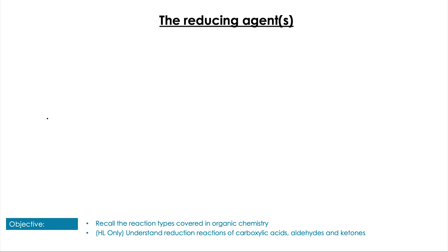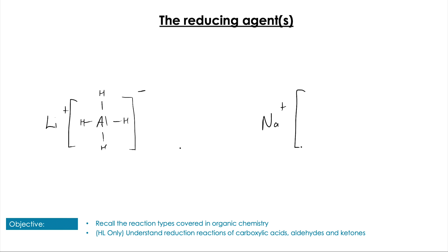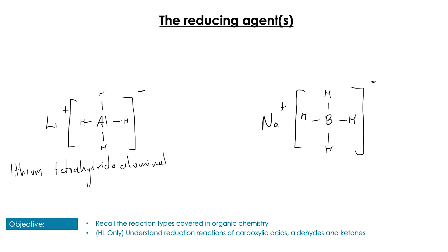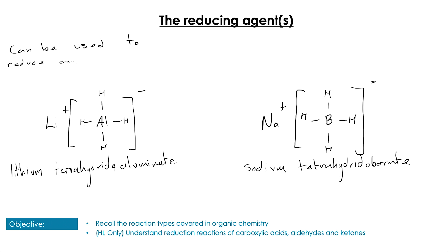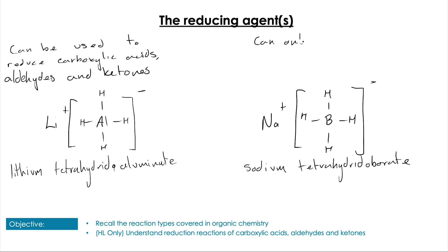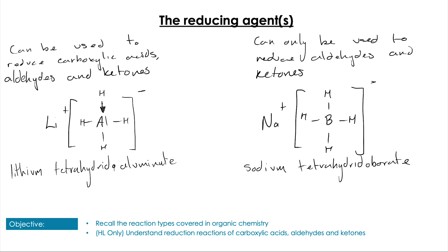The key part is the reducing agents. There are two reducing agents at IB: LiAlH4 — lithium tetrahydroaluminate — and NaBH4 — sodium tetrahydroborate. These are both extremely reactive reagents. The lithium can be used to reduce carboxylic acids, aldehydes, and ketones as it is the stronger of the two. The sodium can only be used to reduce aldehydes and ketones. But both are a source of hydride ions — H minus ions — through the dative bond with the central atom.